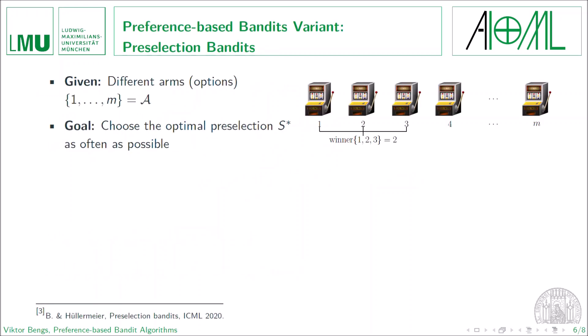Now with all these things in mind, we can specify a sequential decision-making process which we have called the preselection bandits. In this case, as before, we have finite number M of choice options or arms. And our goal is to use the optimal preselection S* as often as possible for our preselection. So the interaction between the learner making preselections and the environment or the user making the choices as follows in each time step T.